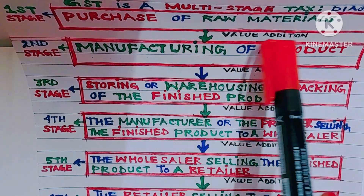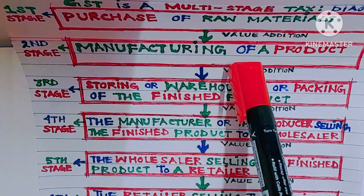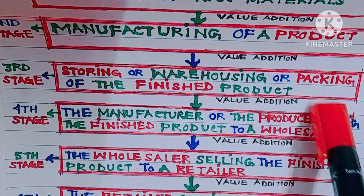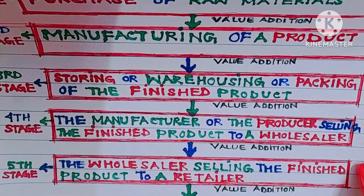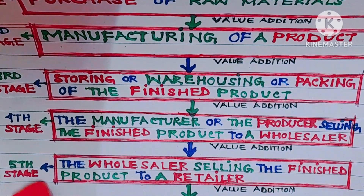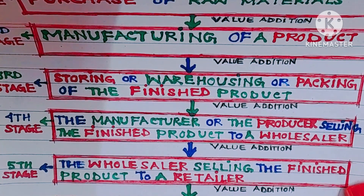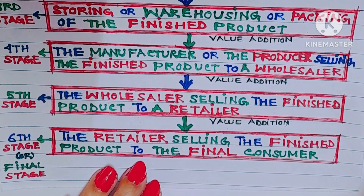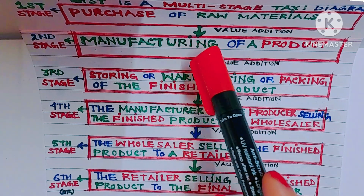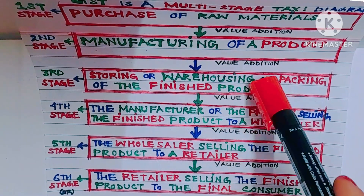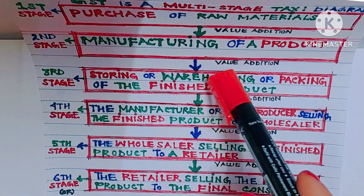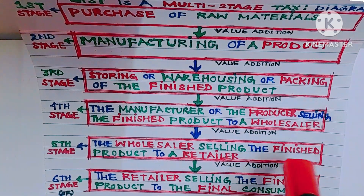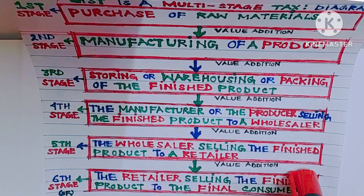Let's go through the chart or diagram. First stage: purchase of raw materials. Second stage: manufacturing of a product. Third stage: storing or warehousing or packing of the finished product. Fourth stage: the manufacturer or producer selling the finished product to a wholesaler. Fifth stage: the wholesaler selling the finished product to a retailer. Sixth stage or final stage: the retailer selling the finished product to the final consumer. At each of these stages, there is some value addition to the product.